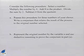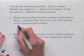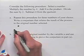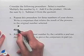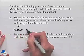Repeat this procedure for three numbers of your choice. Write a conjecture that relates the result of the process to the original number selected. Let's do this first. We're going to begin by selecting a number and then do the operations that are described and write down the result.